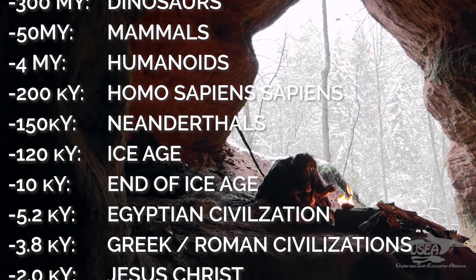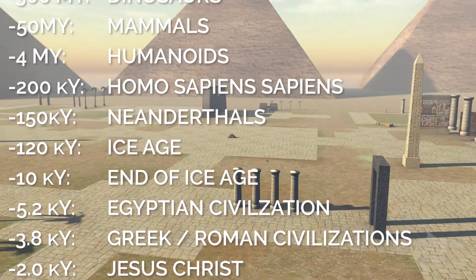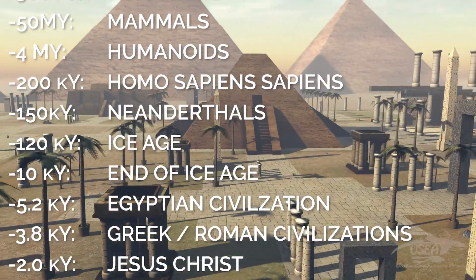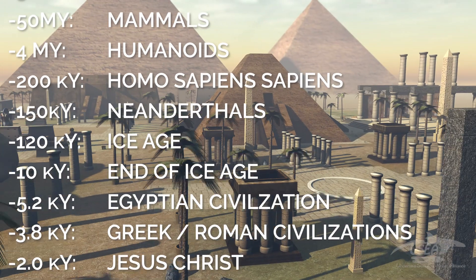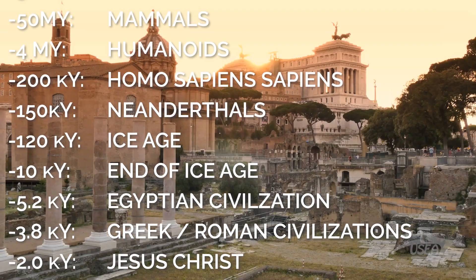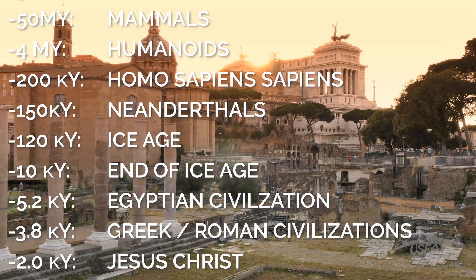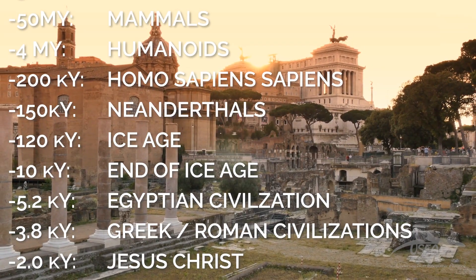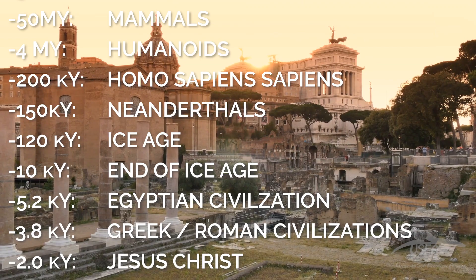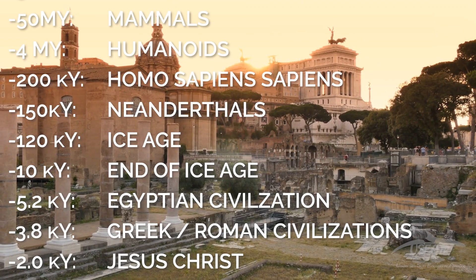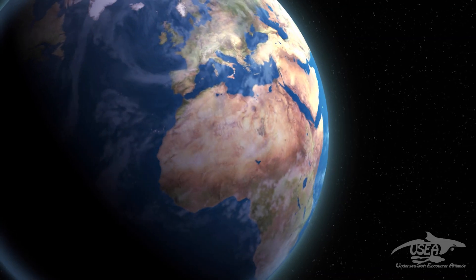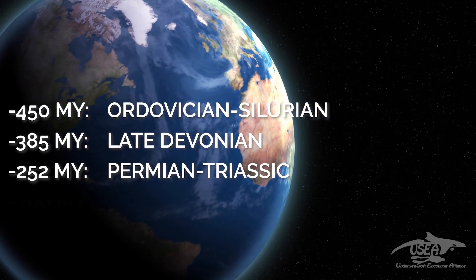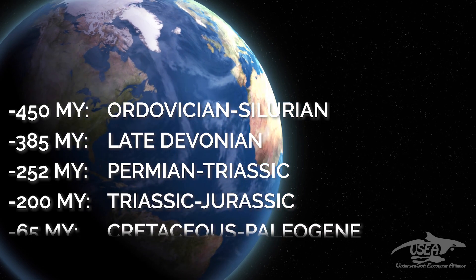Then came the Ice Age, which ended 10,000 years ago. And came the civilizations — Egyptian, Greek, Roman — until the Christ era, 2,000 years ago. All this time, we have seen on Earth five mass extinctions.